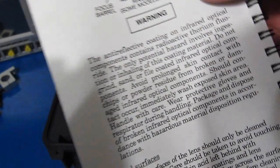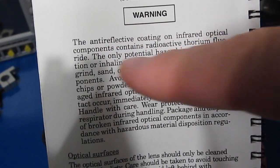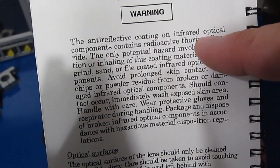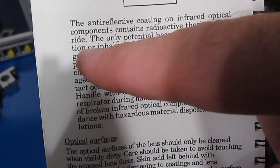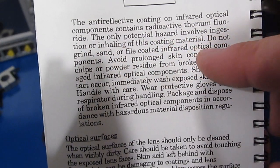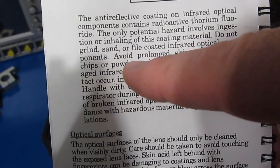In the back of the manual we can see this warning. It says the anti-reflective coating on infrared optical components contains radioactive thorium fluoride. The only potential hazard involves ingestion or inhaling of this coating material. Do not grind, sand, or foul the coated infrared optical components.